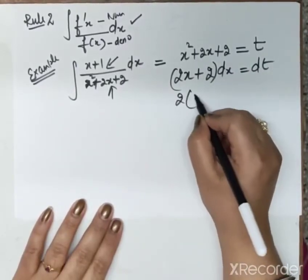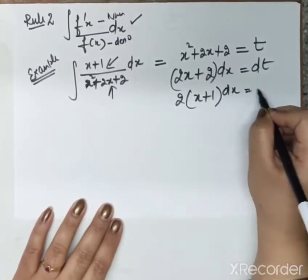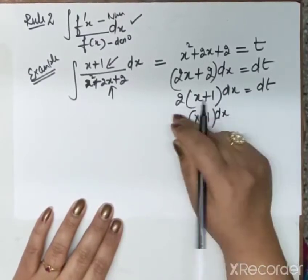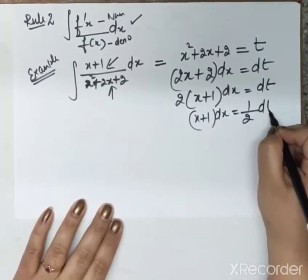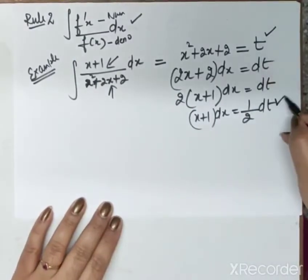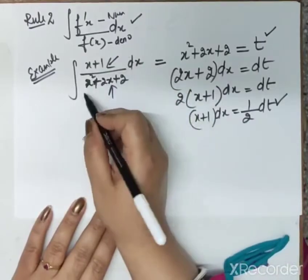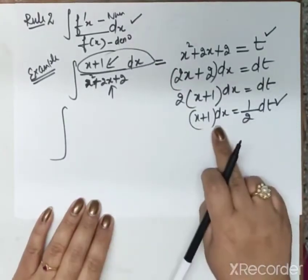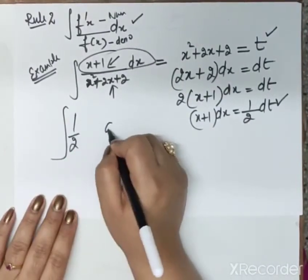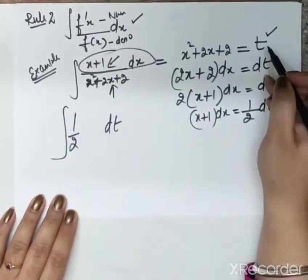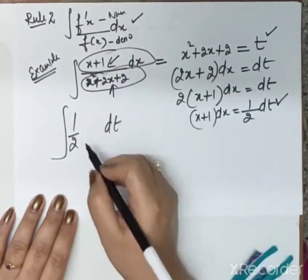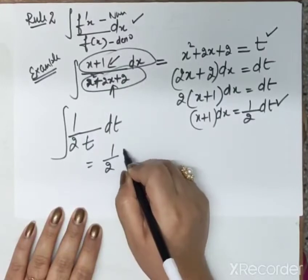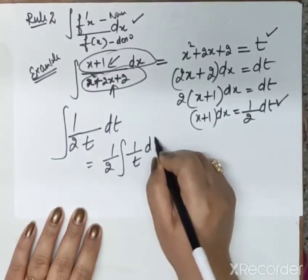Take 2 common: we need the form (x+1) dx, so take 2 to the other side. This gives (x+1) dx = (1/2) dt. So we now have t and dt. In the main expression, in place of (x+1) dx we write (1/2) dt, and in place of the expression x² + 2x + 2 we write t.